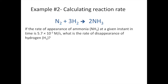Here's the problem: if the rate of appearance of ammonia (NH₃) at a given instant in time is 5.7 × 10⁻³ molar per second, what is the rate of disappearance of hydrogen? Looking at this qualitatively first — we're going to need three H₂ molecules for every two molecules of NH₃ that we make.